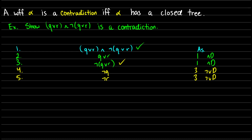Remember, we want to do and-decomposition and not-or decomposition as soon as we can because we don't get branching paths there. Now the only thing left is to decompose 'q or r', which gives us branching paths: one case where q is true and one where r is true. This is line 6, from line 2, or-decomposition. Both close because we have q and not-q, and r and not-r — contradiction on both sides. It closes.